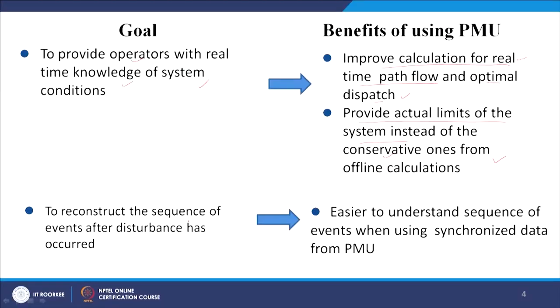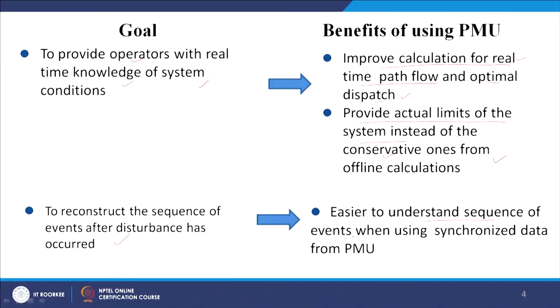The second goal is to reconstruct the sequence of events after a disturbance has occurred — for example, how to reconstruct the system after a blackout or brownout. It will be easier to understand the sequence of events using synchronized data from PMUs. If we record data online, we can record from where the disturbance originated and where it ended, and these data sequences can always be recorded by this monitoring system.